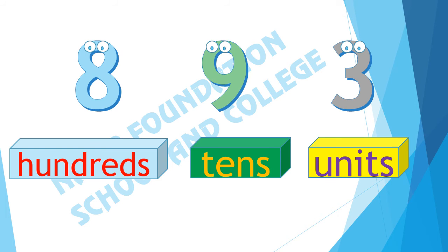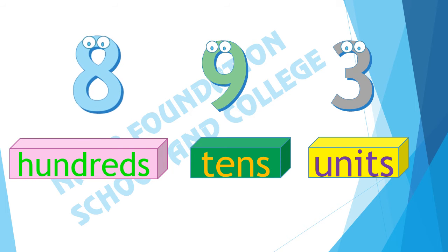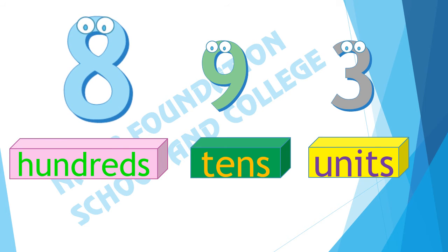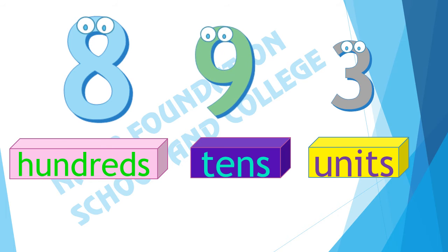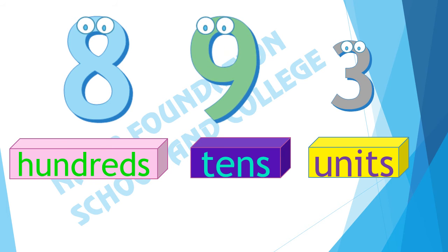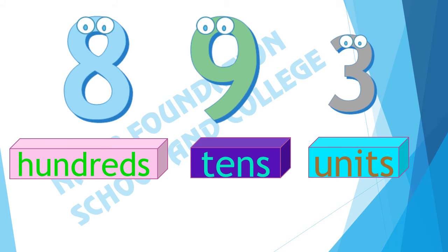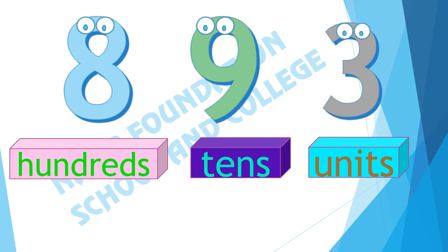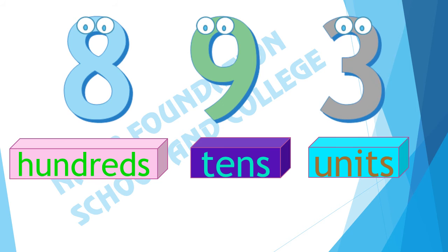In the number 893, there are 8 hundreds, 9 tens, and 3 units. It makes 8 hundred and ninety-three.